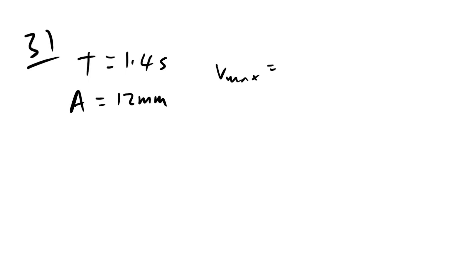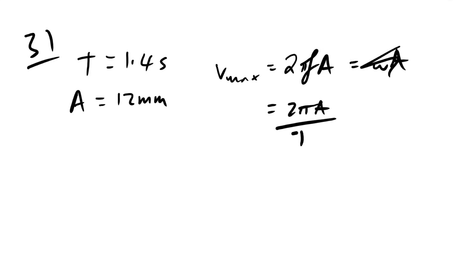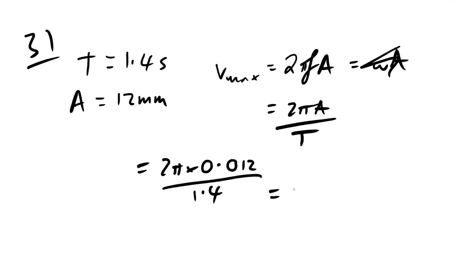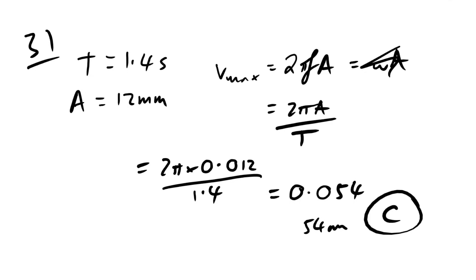Question 31: SHM with time period 1.4 s and amplitude 12 mm. Maximum speed v_max = 2πA/T = 2π × 0.012 / 1.4 ≈ 0.054 m/s = 54 mm/s. The answer is C. I hope you found this helpful — please leave a like, and click the card for the playlist.